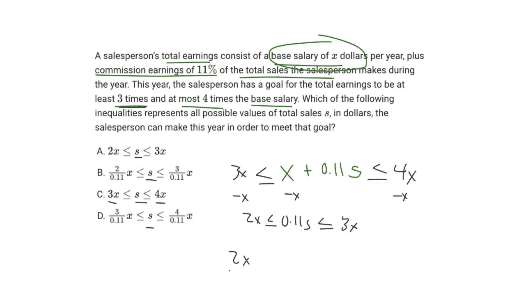So we get 2X over 0.11 is less than or equal to S, less than or equal to 3X over 0.11.